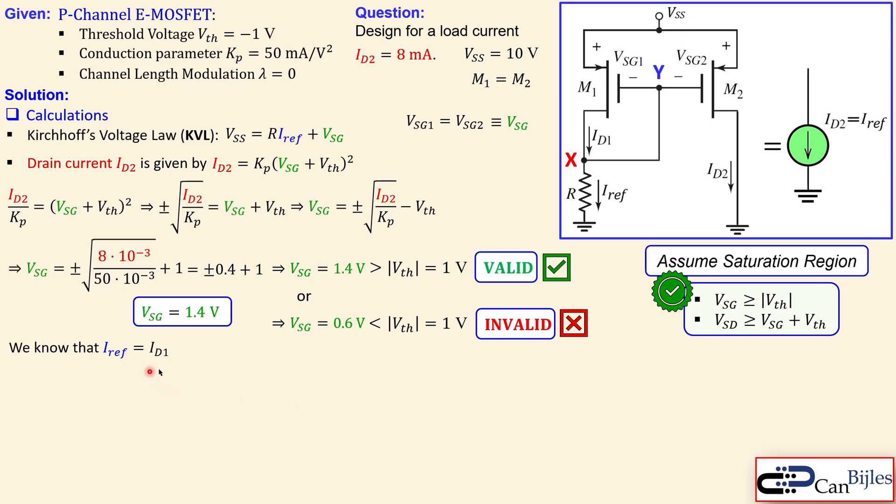We know that Iref equals ID1 because the gate currents are zero for MOSFETs. This also equals ID2 since VSG1 and VSG2 are the same. Using Kirchhoff's voltage law, we can express R equals VSS minus VSG over Iref. With 10 volts, 1.4 volts for VSG, and 8 milliamps for Iref, the calculation gives 1075 ohms exactly. We need this resistor value to get 8 milliamps load current.